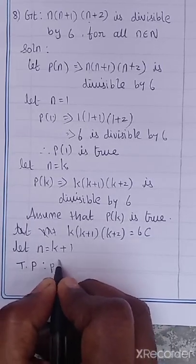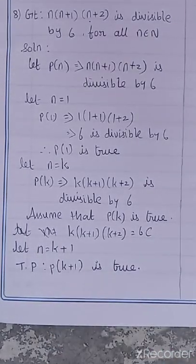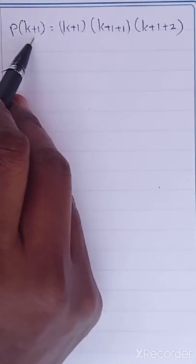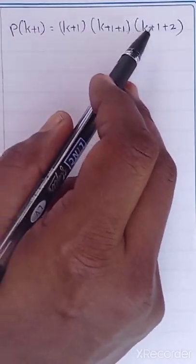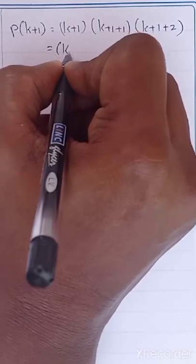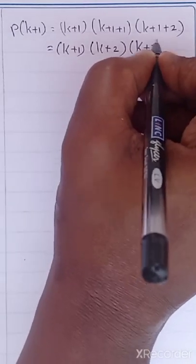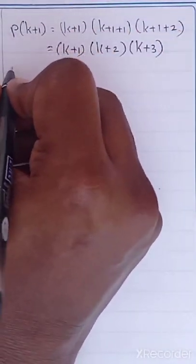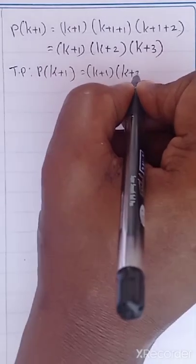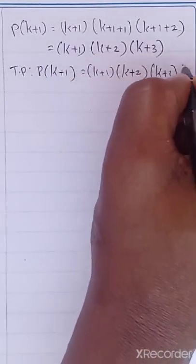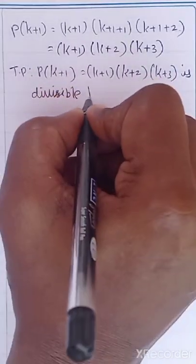We want to prove that P of K plus 1 is true. What is P of K plus 1? Substituting K plus 1 for N: it becomes K plus 1 into K plus 1 plus 1 into K plus 1 plus 2, which is K plus 1 into K plus 2 into K plus 3 is divisible by 6.